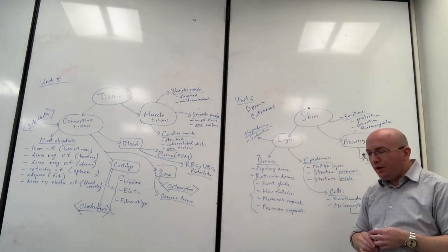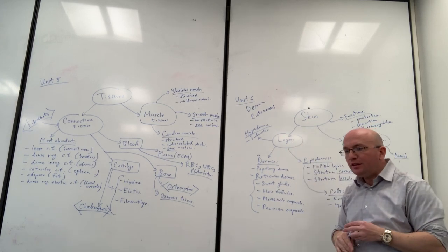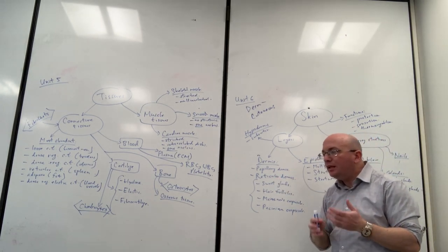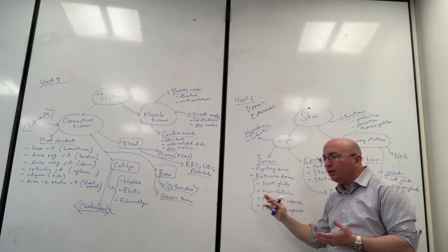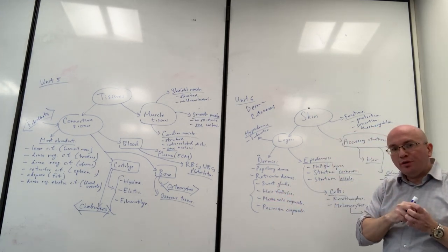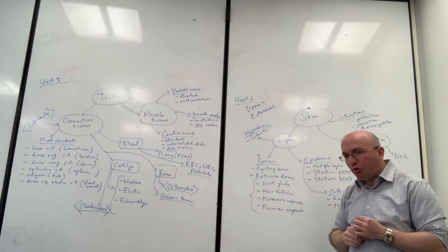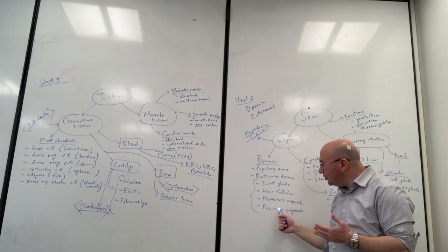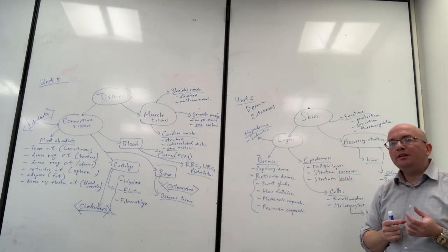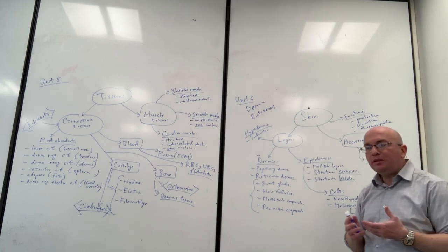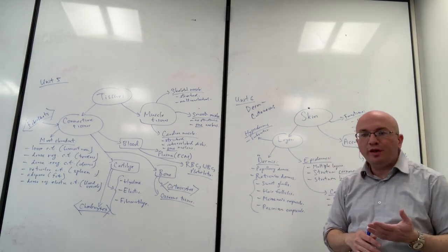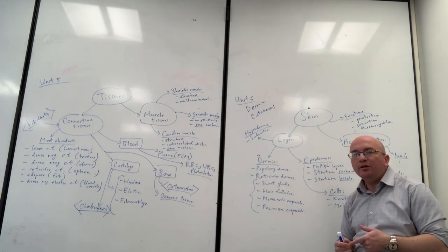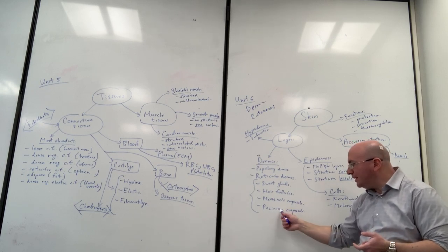A good way to separate the dermis is to identify the upper portion as the papillary dermis - the wavy upper region seen on slides - and the bigger portion as the reticular dermis, which consists of sweat glands, hair follicles, and unique sensory structures called corpuscles. There are two main types of corpuscles connected to nerve endings: Meissner's corpuscles for detecting light touch, and Pacinian corpuscles for detecting pressure or vibration.